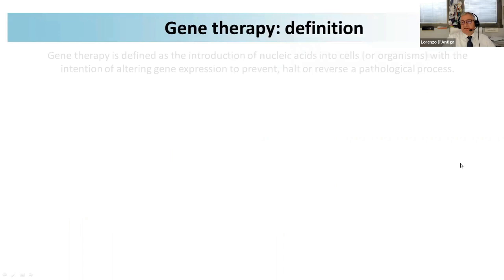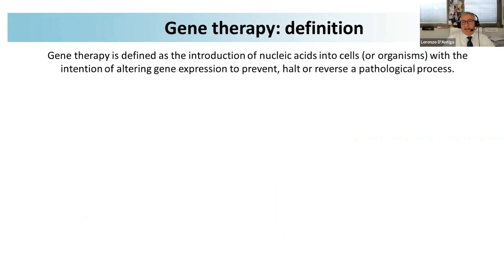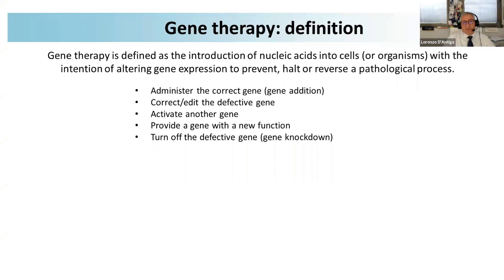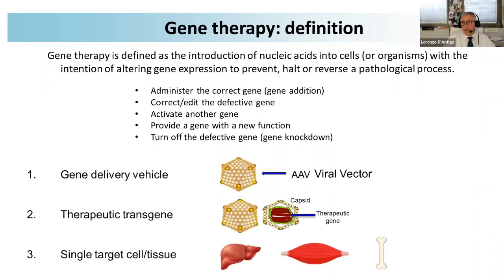What are the main strategies for gene therapy? First of all, gene therapy is defined as the introduction of nucleic acids into cells or an organism with the intention of altering gene expression to prevent, halt, or reverse a pathological process. We can do this in three ways: administering the correct genes (gene addition), correcting the defective gene or providing a new function, or switching off the defective gene — what we call gene knockdown.